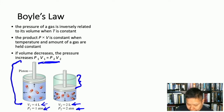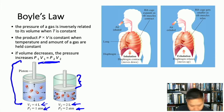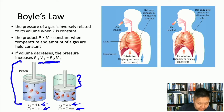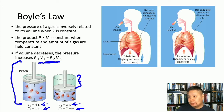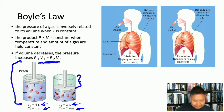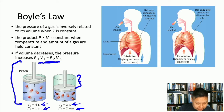Boyle's Law can be demonstrated by how our lungs work. During inhalation, our lungs expand, the pressure decreases, and air flows toward the lower pressure in the lungs. During exhalation, lung volume decreases and pressure increases, so air flows from the higher pressure inside the lungs to the lower pressure outside.